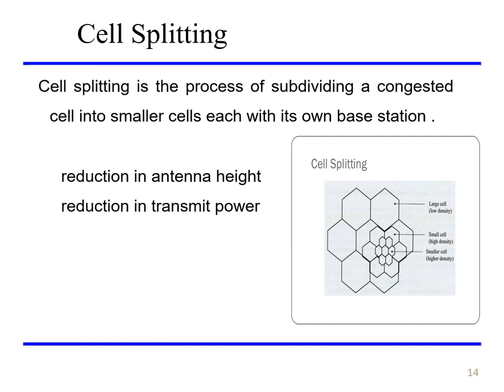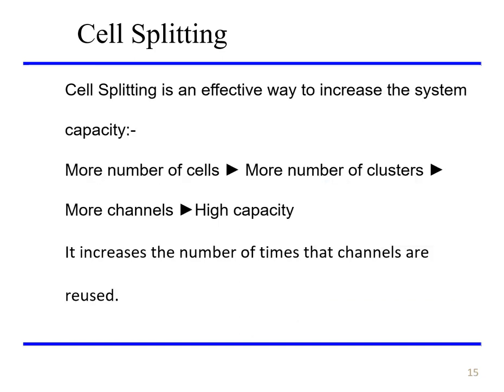Cell splitting is the process of subdividing a congested cell into smaller cells, each with its own base station. The congested cell can be reduced by lowering the antenna height or reducing transmit power. Cell splitting is an effective way to increase system capacity, as more cells means more clusters, more channels, and increased capacity, also increasing the number of times channels are reused.